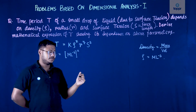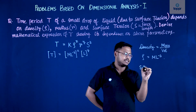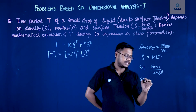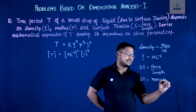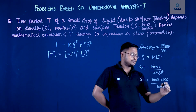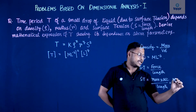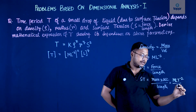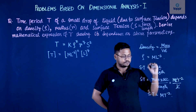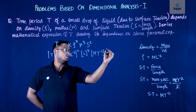Radius must have the dimension of length, so we write it as L to the power Y. Surface tension, as given in the problem, equals force per unit length. The dimension of surface tension is force — which is mass times acceleration — divided by length. Acceleration is L·T⁻², so this becomes M·L·T⁻² divided by L; the L cancels, giving surface tension the dimension of M·T⁻². So we write it as (M·T⁻²) to the power Z.